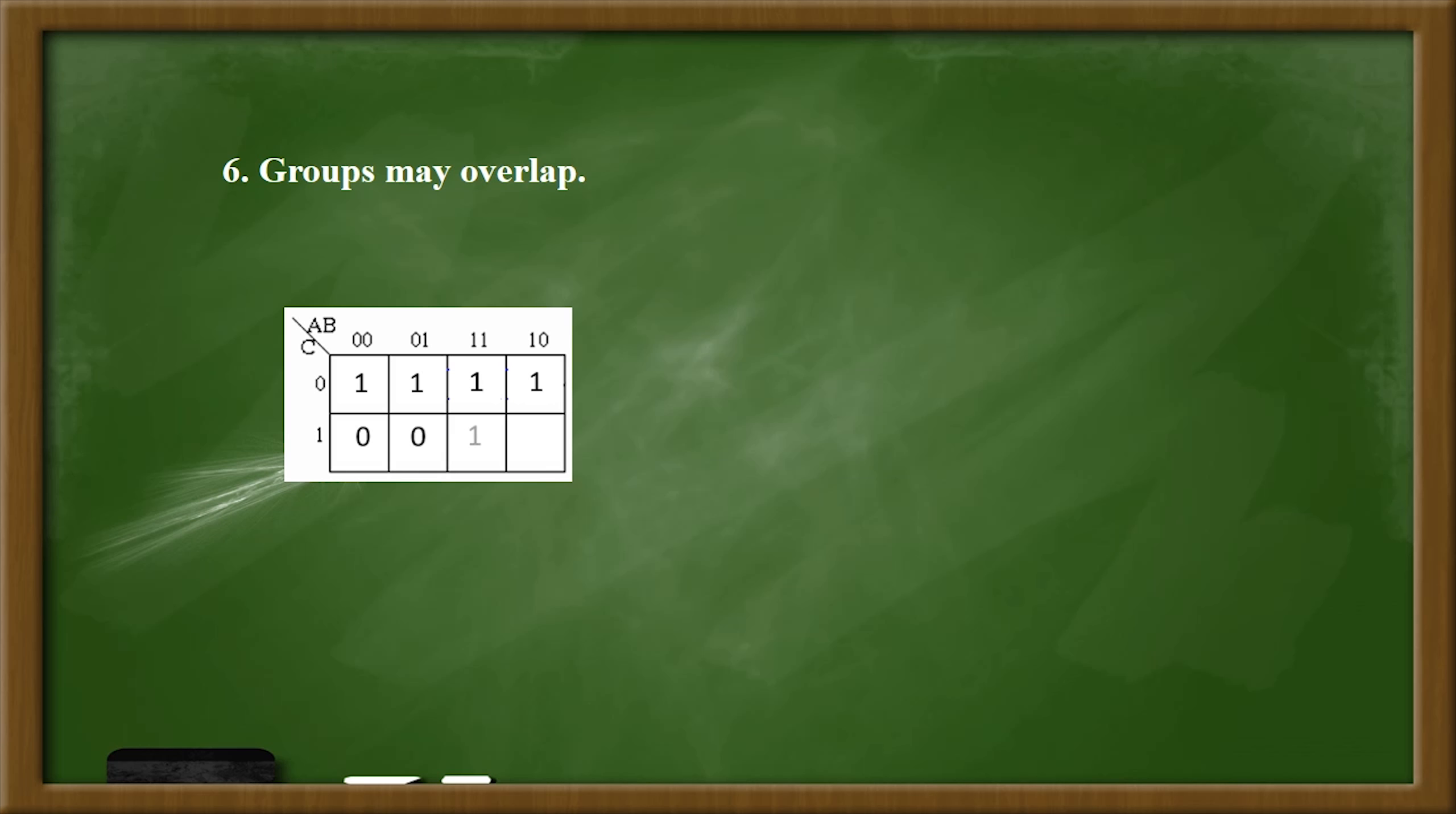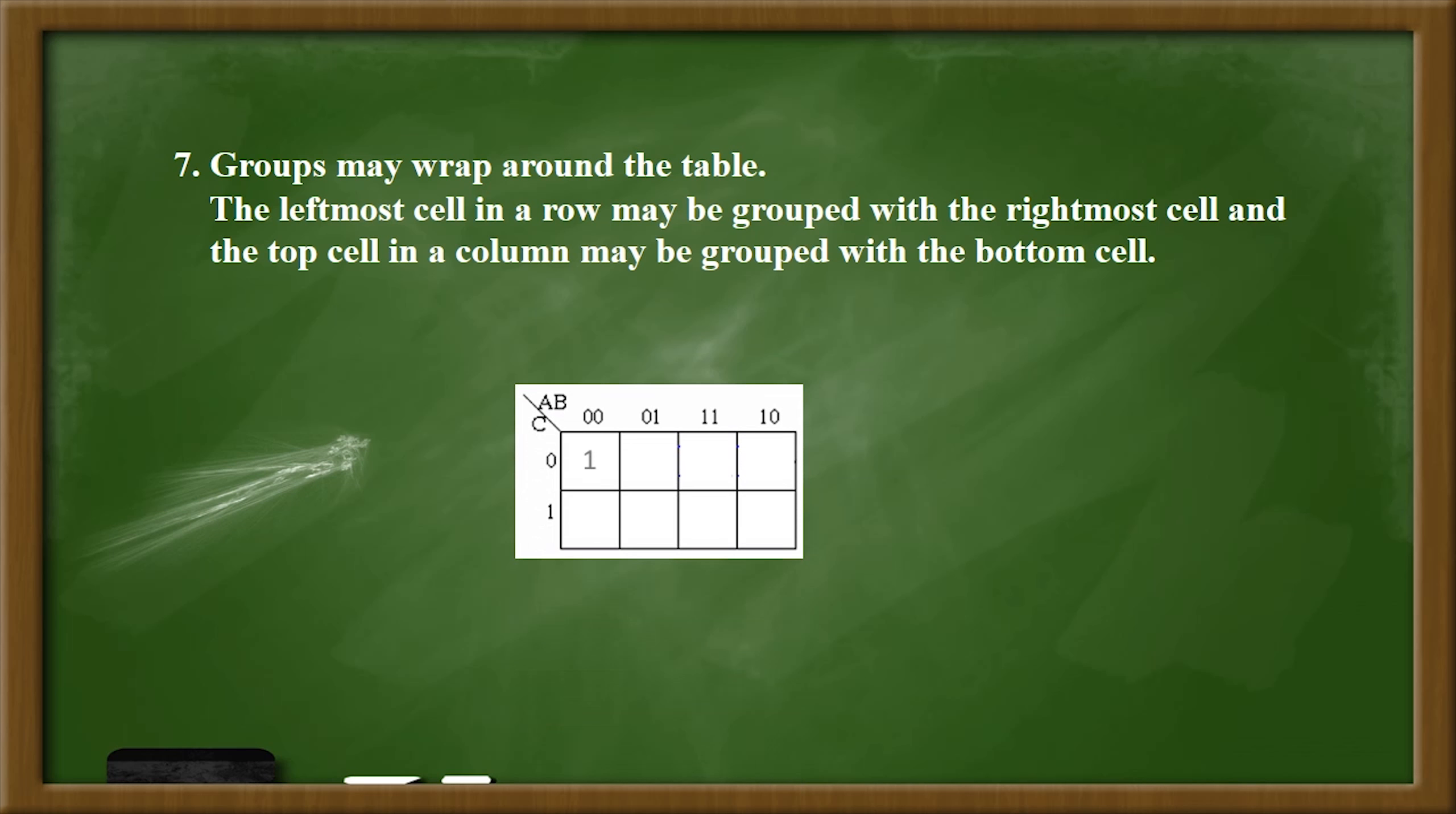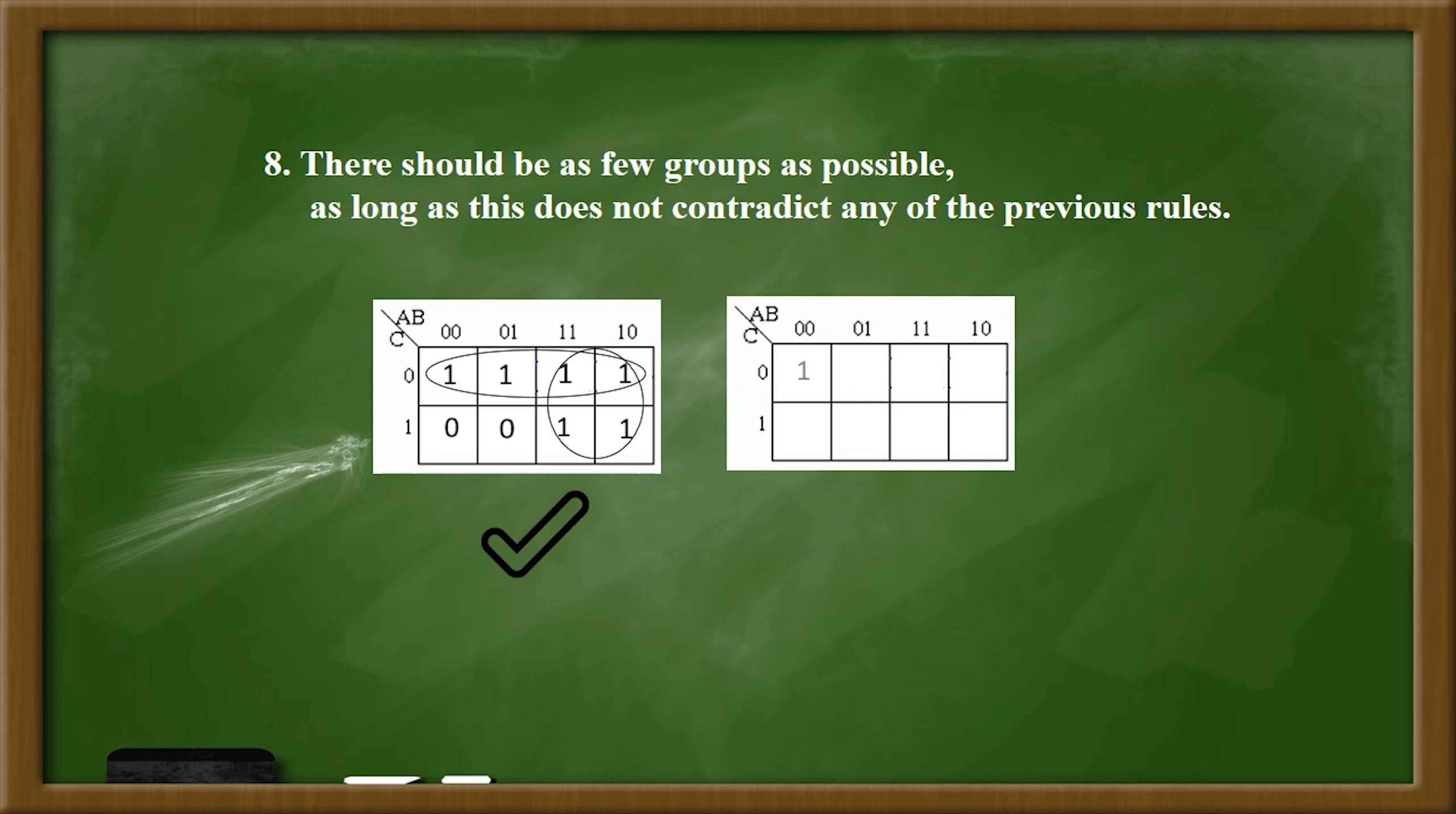Groups may overlap as we can see on the first picture. The leftmost can continue to the rightmost, for example. Finally, there should be as few groups as possible, as long as this does not contradict any of the previous rules.